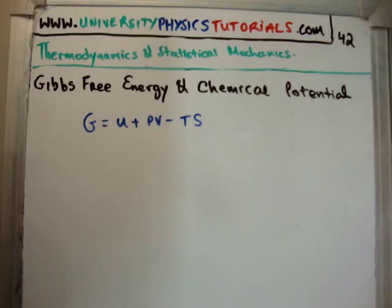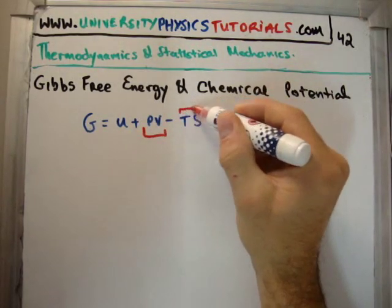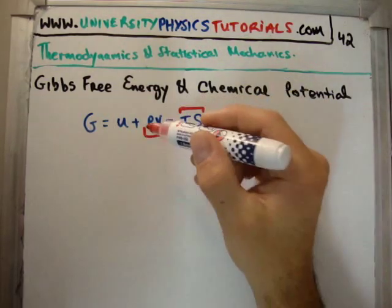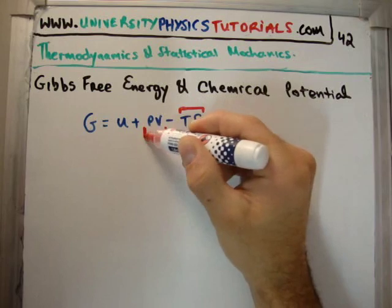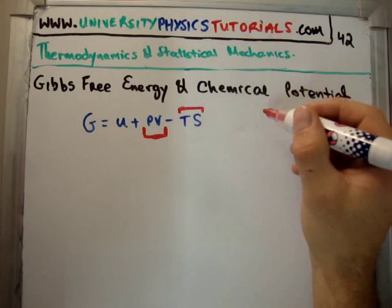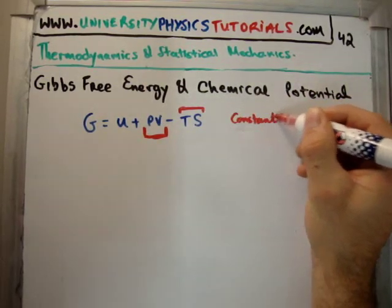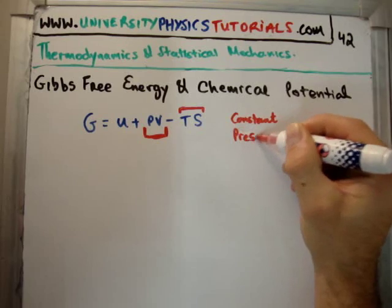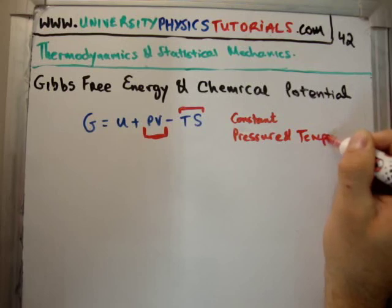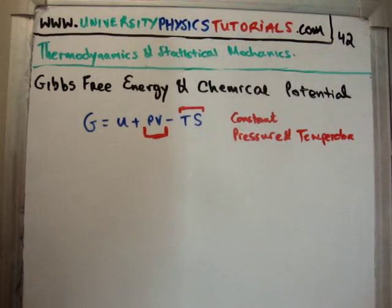So basically what this was, was we had mechanical work being done against the surroundings, and because our surroundings, our environment, was at constant temperature, we could also avail of free heat to the value or quantity of TS. And we found that this is at constant pressure and constant temperature.